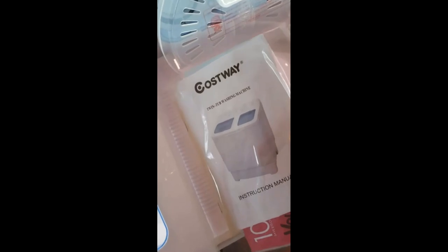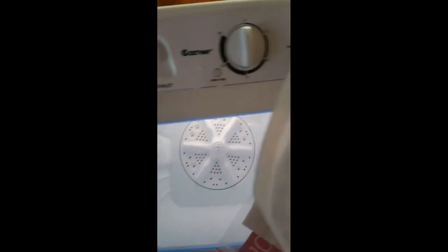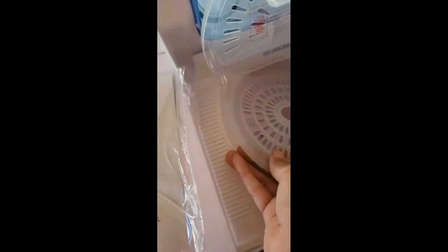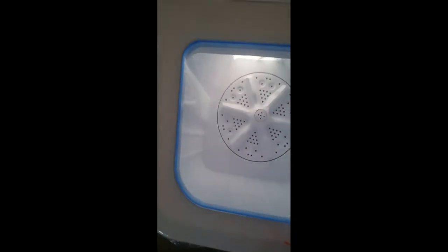The name of the machine again is Costway. This is also the lid that you put on here on top of your clothing. You put this on top to level it out, just like this on top of your clothes, so it will spin evenly.